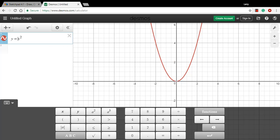What I've done is typed in just the parent graph, the mother function, y equals x squared, and you can see this typical parabolic shape opening upwards.